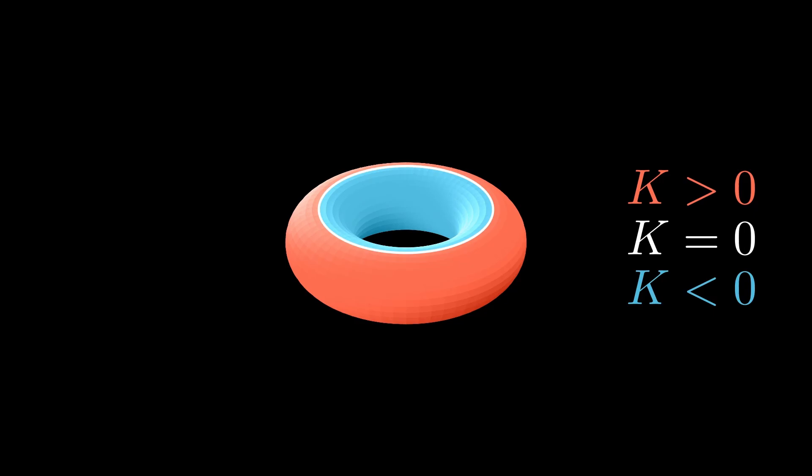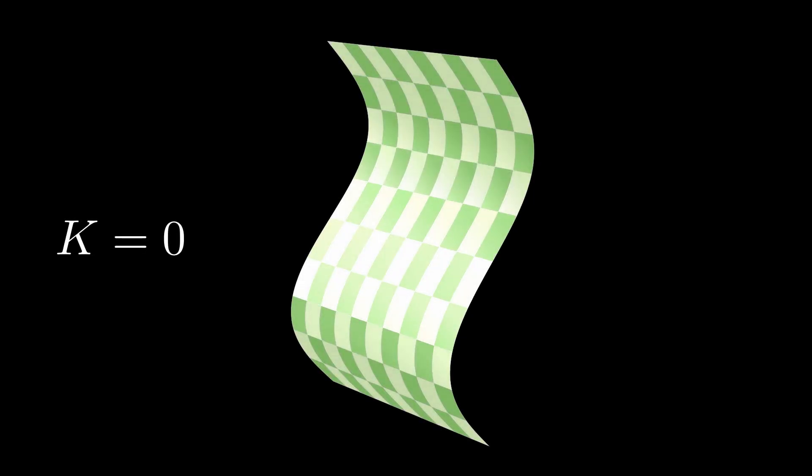On the inner side of the torus, the Gaussian curvature is negative, as the principal curvatures have different signs. On the circles between these areas, the Gaussian curvature is 0, as there is a normal section which has 0 curvature. Now let's look at the bent paper. Here the Gaussian curvature is everywhere 0, as there is always a flat normal section.